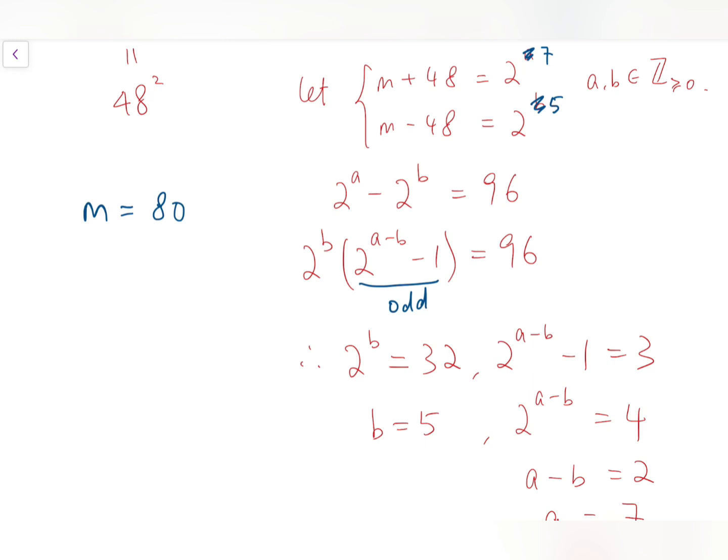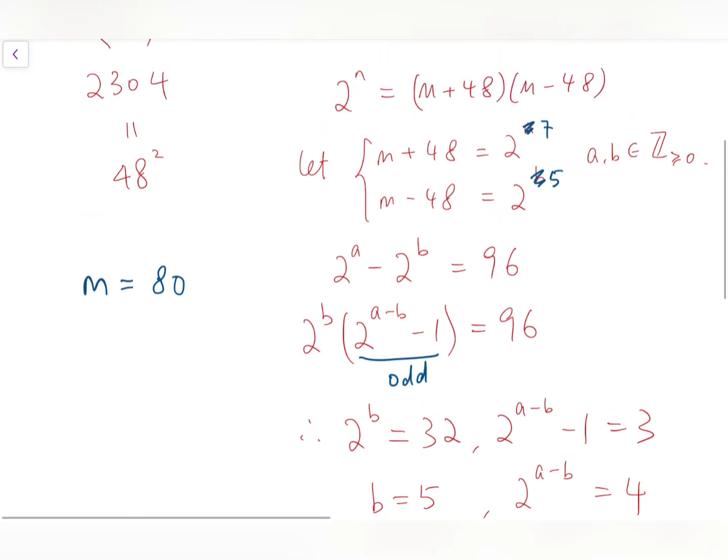And so checking, we actually have n equals 7 + 5, because a + b here equals n. So n equals 12.